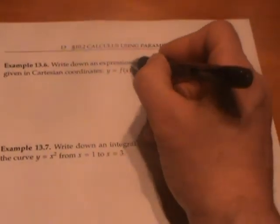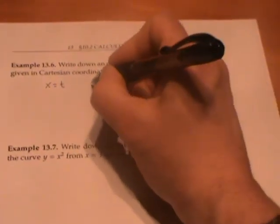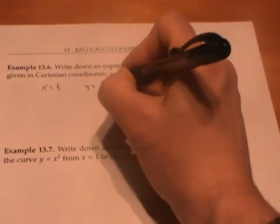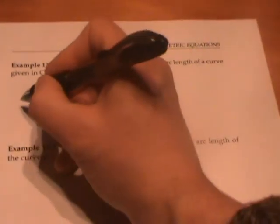We've done this derivation of arc length for functions written with parametric equations, but it's really easy now to write down an expression for the arc length of a curve given in Cartesian coordinates. If we have a function y equals f of x in Cartesian coordinates, we can parameterize that by letting x equals t and then y is just f of t.